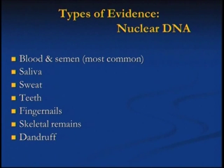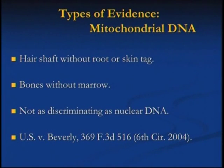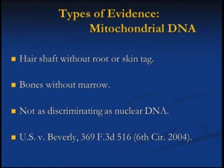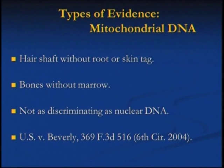There's a second type of DNA — mitochondrial DNA. It's not as powerful or discriminating, but it's very helpful when you cannot get regular nuclear DNA. For a hair shaft: if it has a root or skin tag pulled out, you use regular DNA; if it's a shed hair, you can use mitochondrial DNA. The same applies to bones without marrow or skeletonized remains. It's not as discriminatory, but it's better than anything we had before, especially for hair.